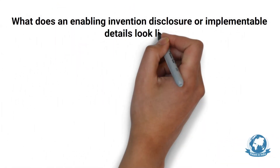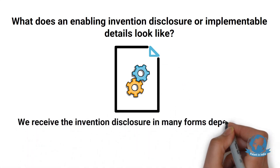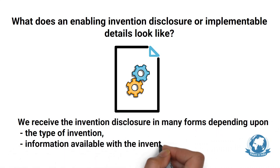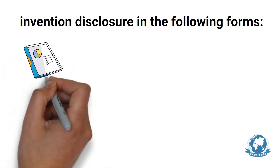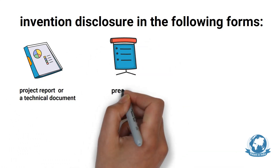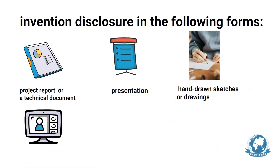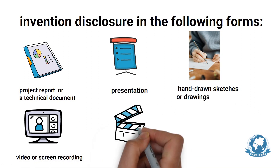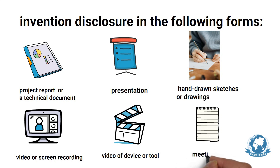What does an enabling invention disclosure look like? We receive invention disclosures in many forms depending on the type of invention, the information available with the inventor, and the stage of the invention. These forms include: a project report or technical document covering all aspects of the invention; a presentation or PPT with technical details; hand-drawn or rough sketches or drawings of the device with explanation; a video or screen recording on a computer; a video of a device or tool explaining how it functions; or meeting notes from a discussion with a patent attorney about the invention.